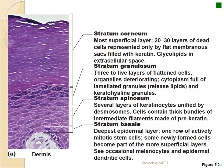The stratum granulosum — 'granulosum' meaning little spots — is where the cell is dying. The organelles are disappearing and the cells are filling with the protein keratin, which is laying itself down into sheets. This is now being prepared to become the final layer as cells are pushed up to the stratum corneum. The stratum corneum is technically dead and can vary from 20 to 30 or more layers. The stratum corneum on the bottoms of your feet can be about 40 layers; calluses are all thickened stratum corneum.